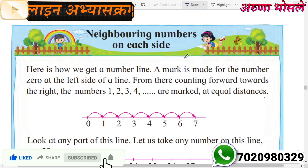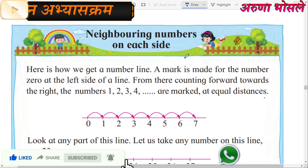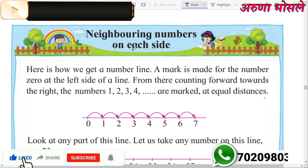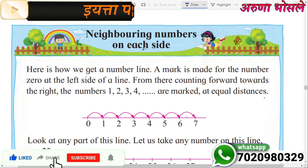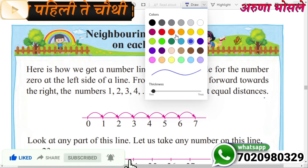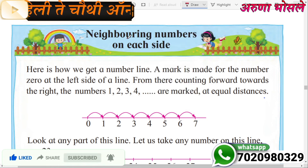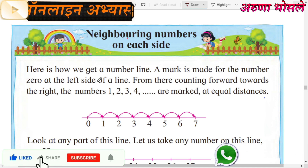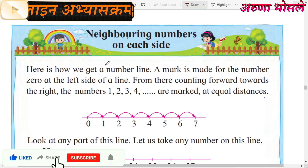Neighboring numbers on each side. Sankheche shejari konache shejari? Neighboring numbers — sankheche shejari konte? On each side means sankhechea doni bazu te shejari — the number just before and the number just after.